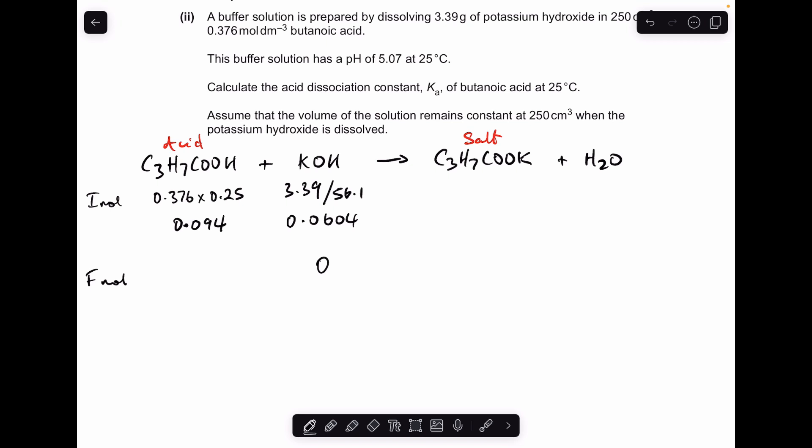But the other thing we need to do is work out the final moles of acid so it's going to be 0.094 minus the moles of KOH. That comes out at 0.0336.